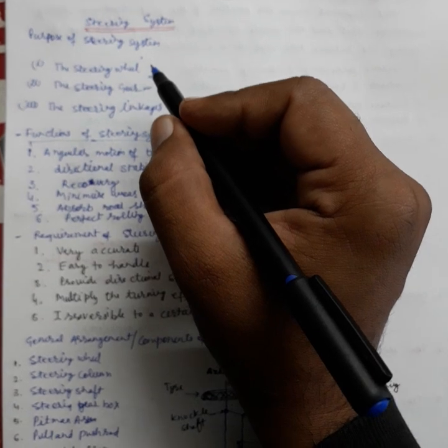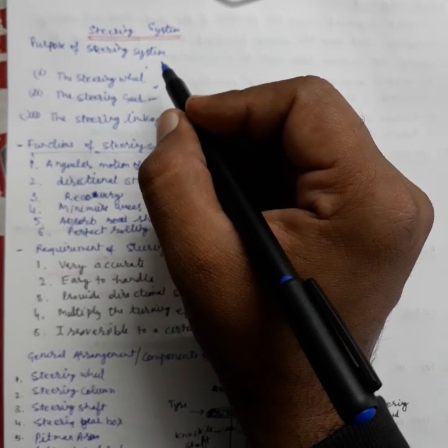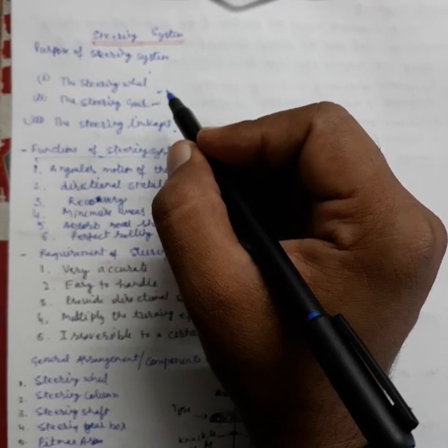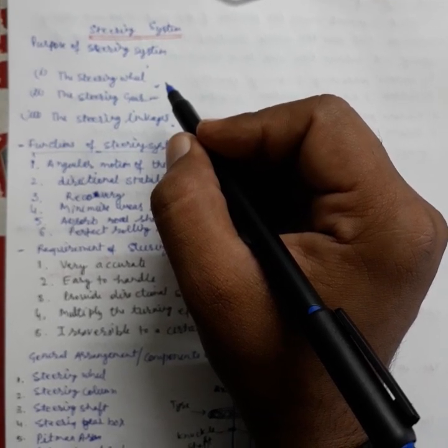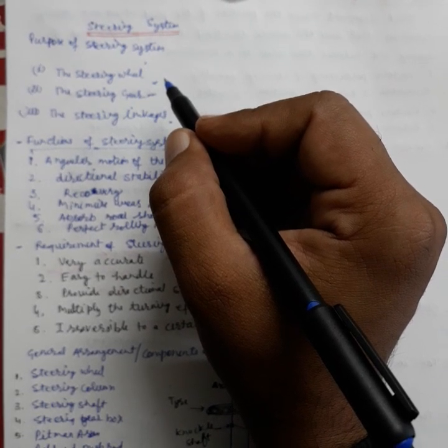Now in the steering system, first of all, what is the purpose of steering system? The steering system allows the driver to guide the car along the road and turn left or right as desired.